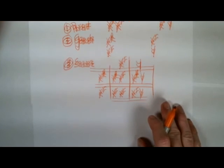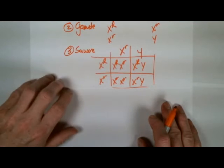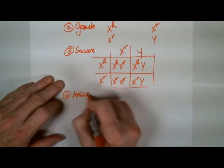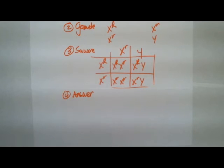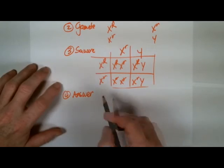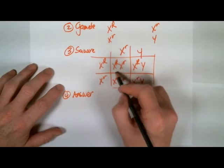Now, the next step then is to answer the question. And our question is, what are the possible phenotypes for this particular cross between that heterozygous red-eyed female and the white-eyed male? So in our answer here, we're going to go through and we're going to look.